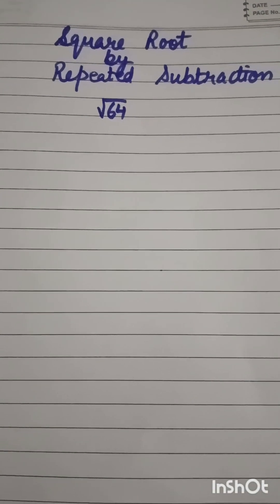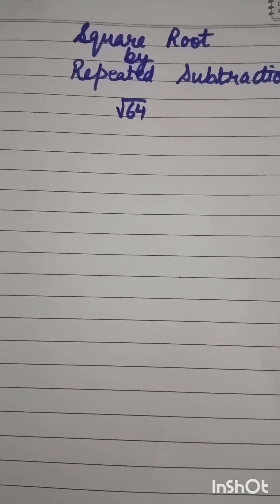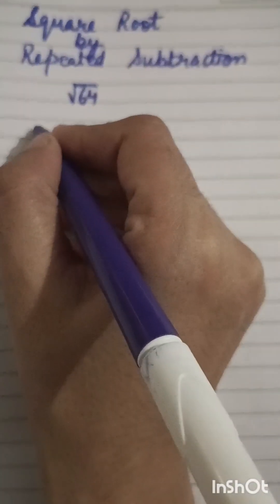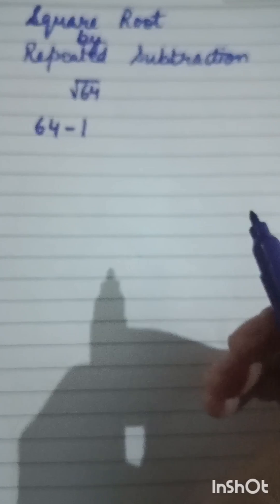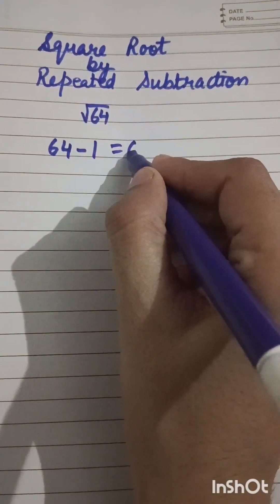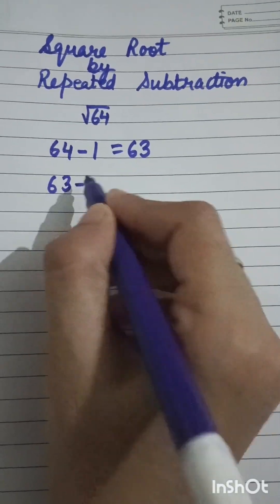What will be the first odd number? That is 1. So 64 minus 1 is 63. Next we will take the next odd number, which is 3. 63 minus 3, the answer will be 60.